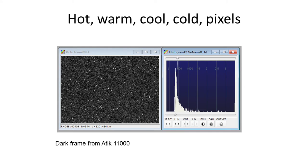This is a dark frame from an ATIK 11000. We can see on the stretched image there are lots of really warm pixels. Typically we don't see very many hot pixels, but we see quite a few warm pixels. A warm pixel is a pixel whose value is above or outside of the normal distribution of bias frame pixels, and they appear as little white spots. There's no clear differentiation between where warm pixels start and normal bias pixels end — you can choose however many standard deviations from the mean to make that definition. On the histogram they appear as a tail to the right of the normal distribution.